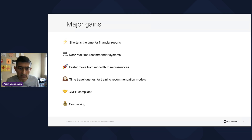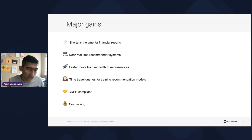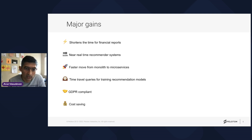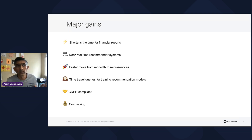There's also a faster move from monolith to microservices, because the analytic systems don't have to change along with the online systems. The online systems can double-write into both the monolith database and the microservice database, and we propagate those writes for analytics. Later, once the analytic systems move to microservice tables, we can cut off writes on the monolith — providing a much more phased approach and also enabling time travel queries for training recommendation models, where teams can point to a specific instant of time and train their models.